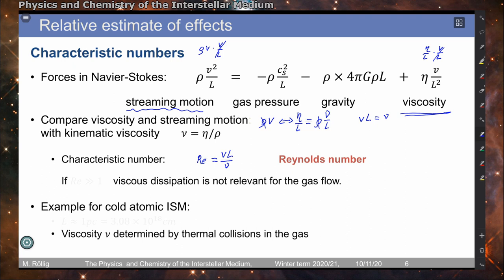If the Reynolds number is much larger than 1, this means that viscous dissipation has no relevant effect for the gas flow. Reynolds numbers much larger than 1 correspond to turbulent streams, or produce turbulent fluid motion — as you know from experimental physics.